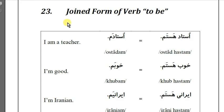Today I'm going to review the next lesson, which is the joint form of the verb 'to be' — BUDAN in Persian. BUDAN means 'to be.' The present form of 'to be' is HASTAM — 'I am,' HASTI — 'you are,' and HAST — 'he or she is.' Let's take a look at some examples.